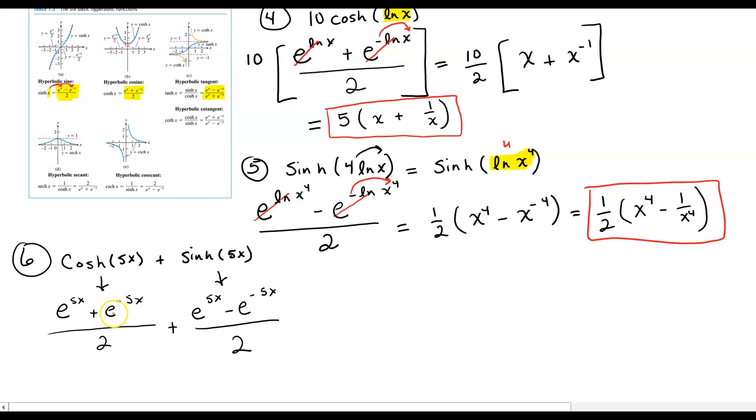So we are in really good shape, because now it's just a matter of adding things in the numerators and combine like terms. The e to the minus 5x actually will cancel itself out there. And I am actually left with two of these e to the 5x's divided by 2. And then through division, we get rid of that 2, leaving us with our final answer of e to the 5x. So really nice and really simple.